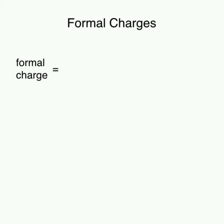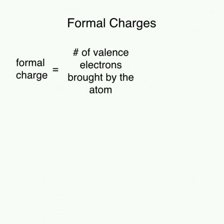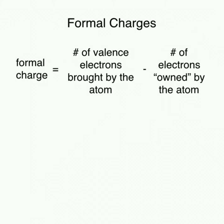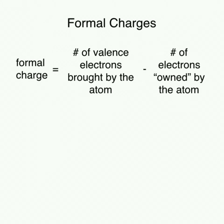To determine which isomers and which resonance structures are most important, we look at the formal charges of each atom in the compound. The formal charge of each atom is determined by taking the number of valence electrons the atom brings to the compound and subtracting the number of electrons the atom owns in the compound. Each atom fully owns its non-bonding pairs of electrons and owns half of its bonding electrons.